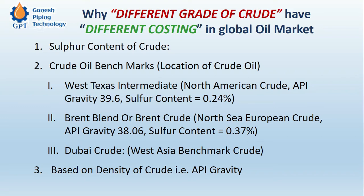If the sulfur content of the crude is greater, then the price of that crude will be less. Vice versa, if the sulfur content is lesser, the selling price will be more. The reason is that high sulfur content crude has a costly refining process and is not desirable, which is why the cost is less. Crude with high sulfur content is called sour crude, whereas crude with lesser sulfur content is called sweet crude.